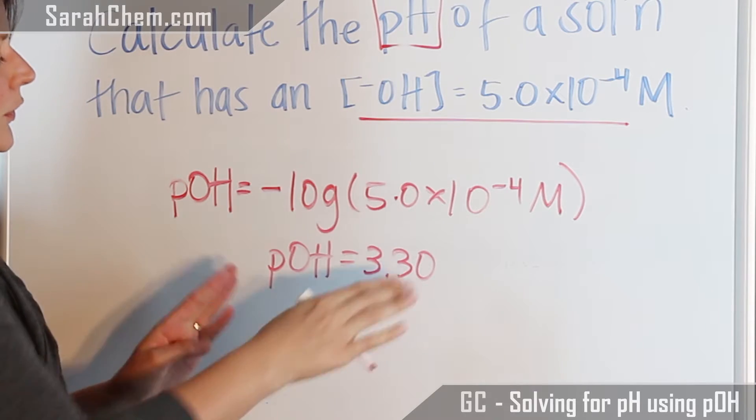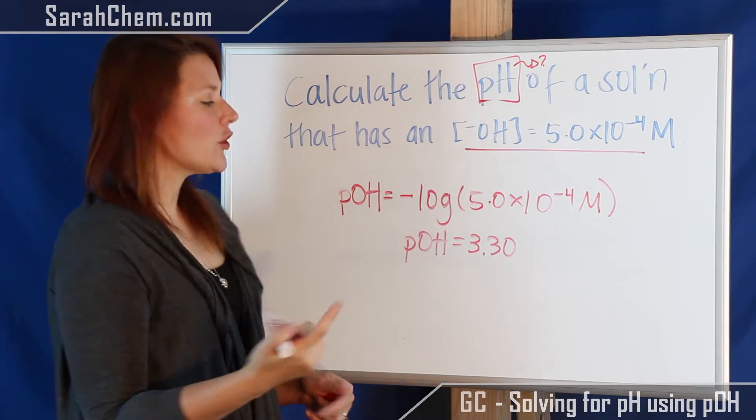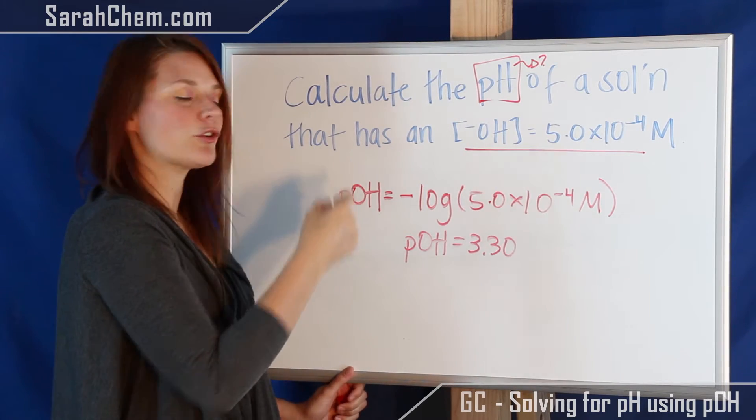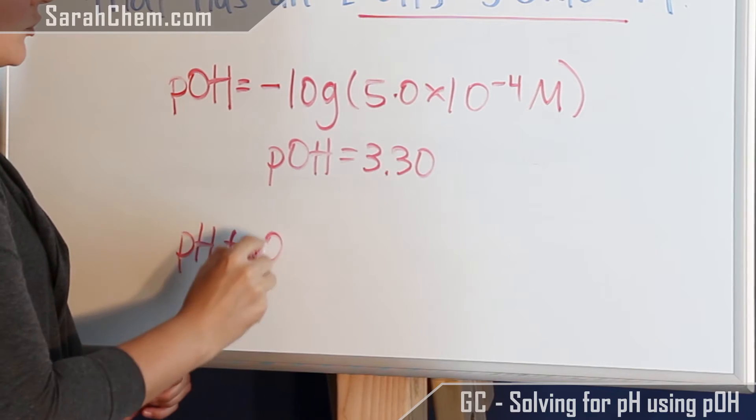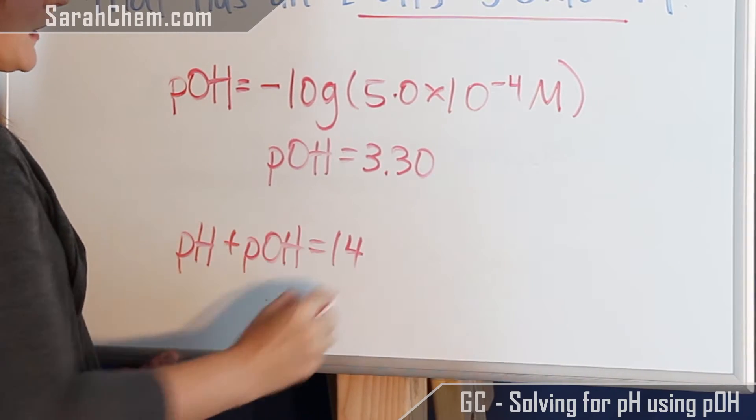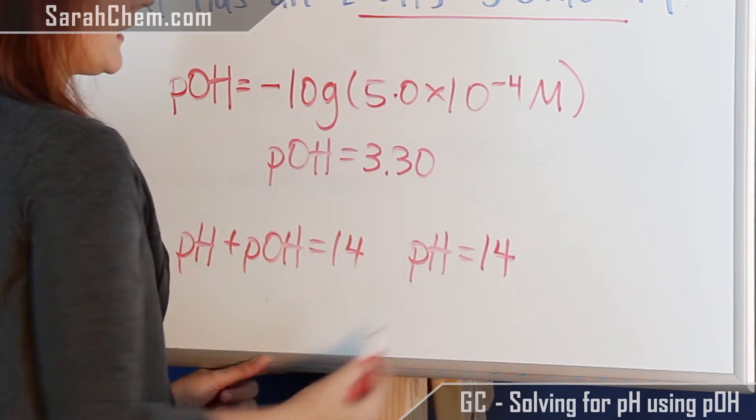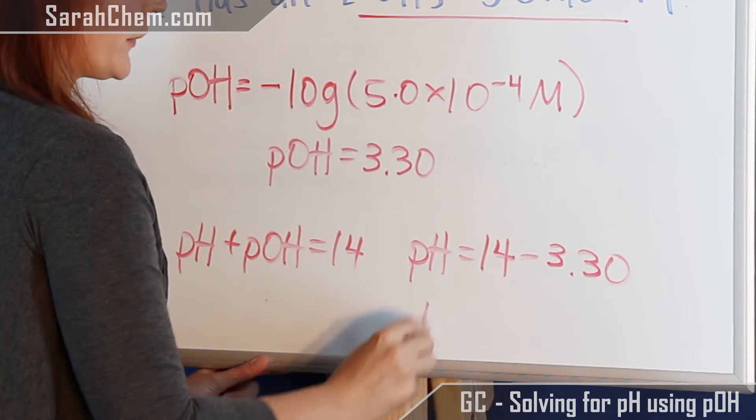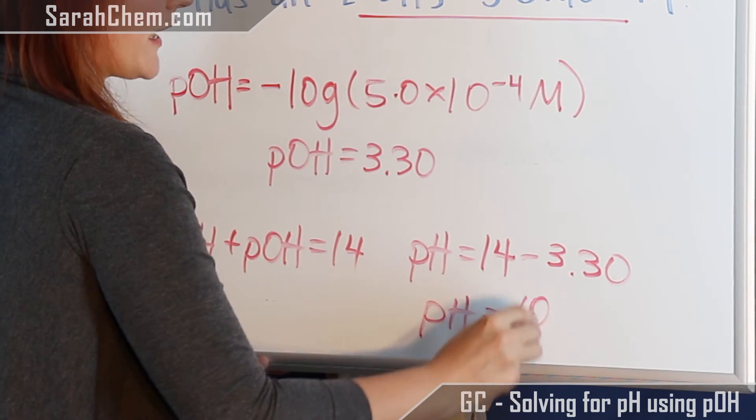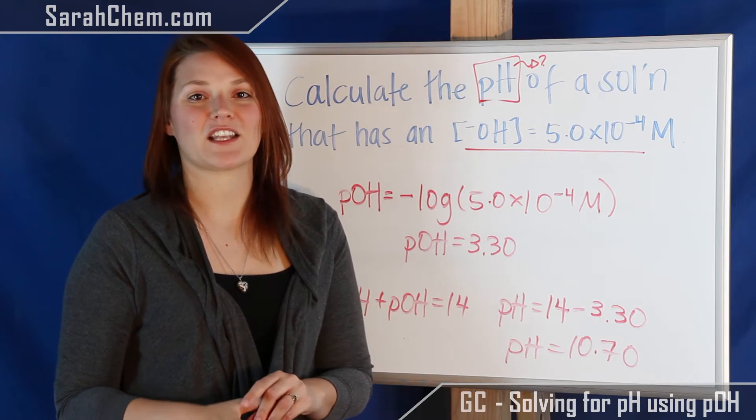So now the next thing we want to do is not stop at this point because it does say what is the pH. So then that relationship that was mentioned earlier will come into play, where we have pH plus pOH is equal to 14, which means that pH would be equal to 14, and in this case minus 3.30. So we get a pH equal to 10.70. And so that would be the pH for this particular solution.